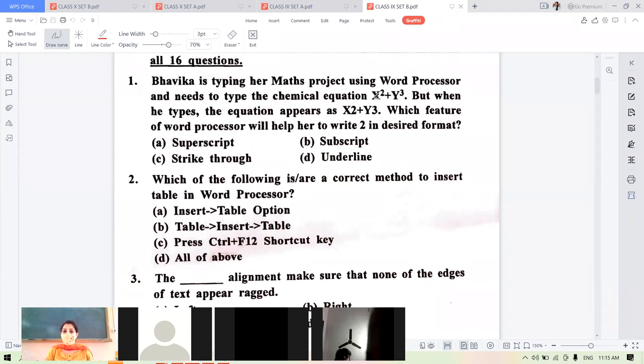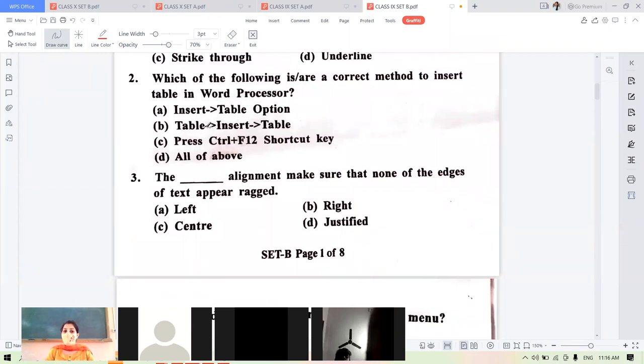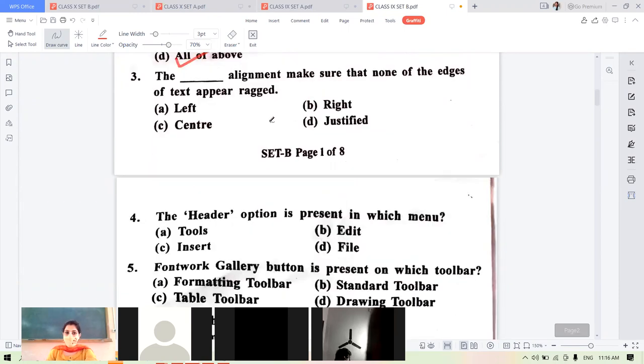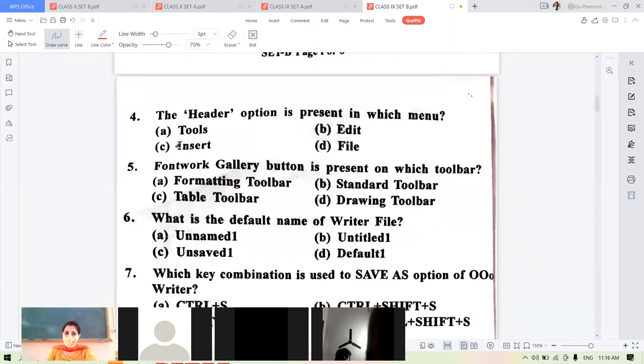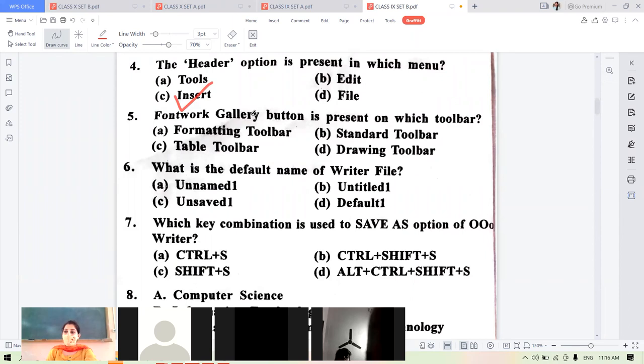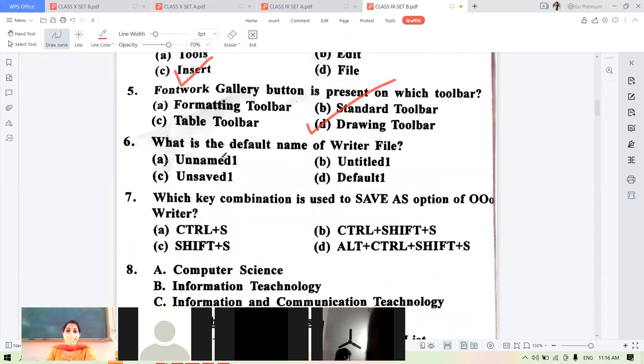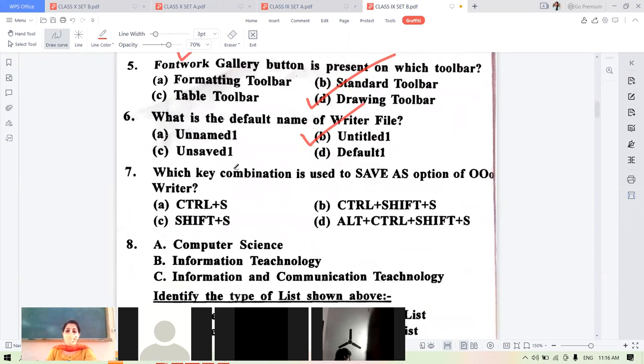Bhavika is typing her maths project. She wants x square plus y cube, but it is coming as x2 and y3. How will it come in the desired format? This is superscript. Which of the following is the correct method to insert a table? Insert table, table insert, F12, all options are correct. The justify alignment makes sure that none of the edges of text appear ragged. Header option is in insert menu. Font work is appearing on drawing toolbar. The default name of the writer file is untitled one.